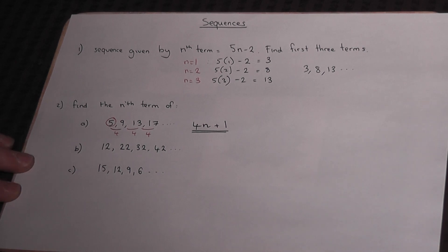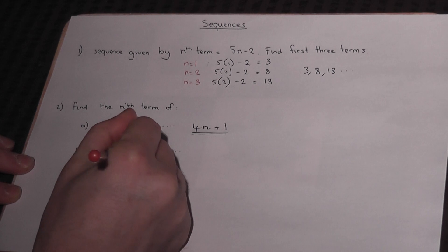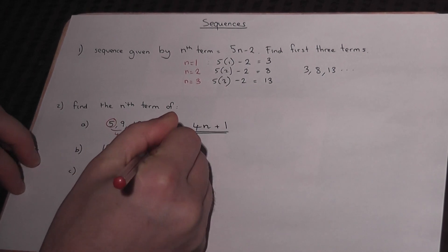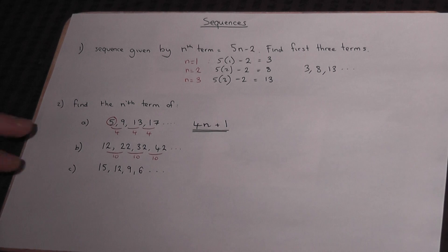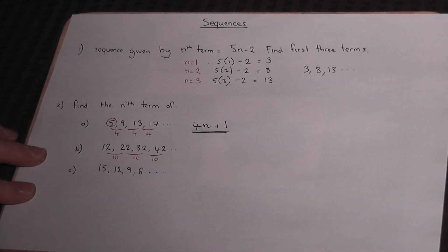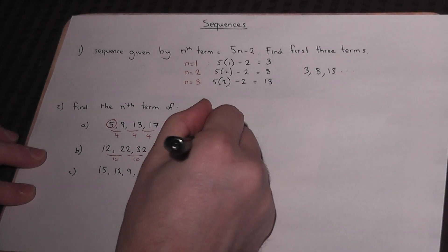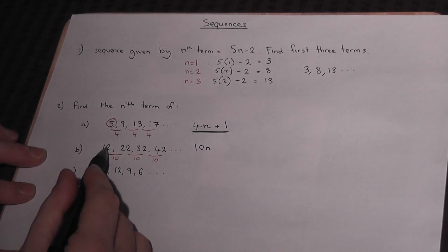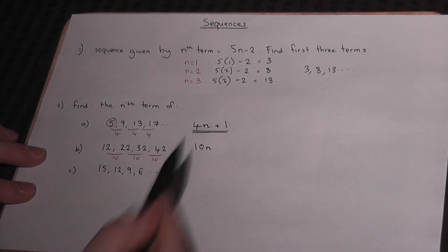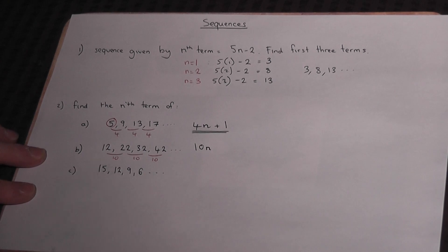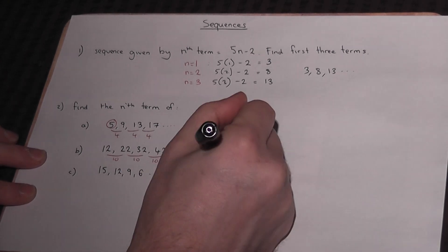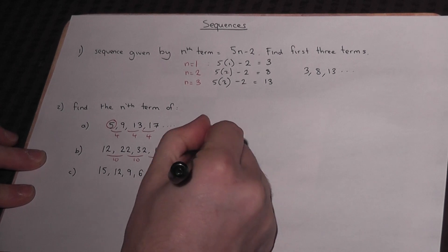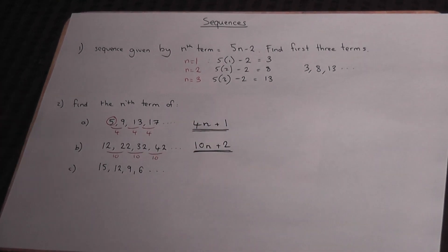For the second example, this sequence goes up by 10 each time — that's its common difference. So it'll be 10n. However, the first term is 12 and we've got a 10 here, and to get from 10 to 12 you have to add on 2. So the nth term of this sequence is 10n plus 2.